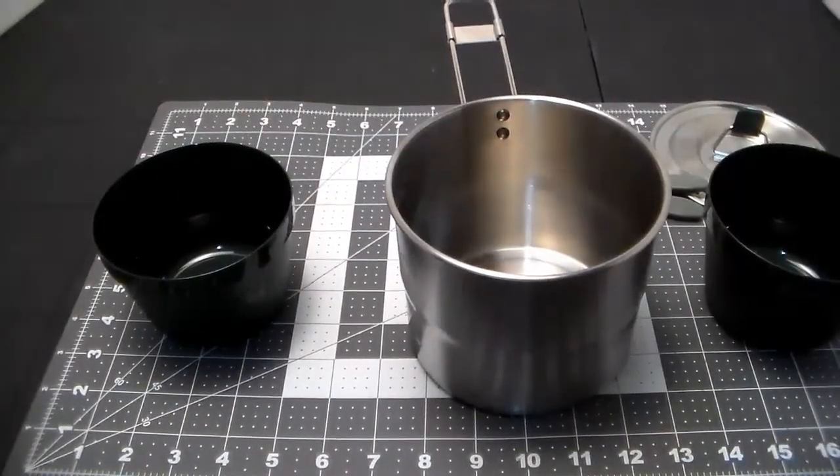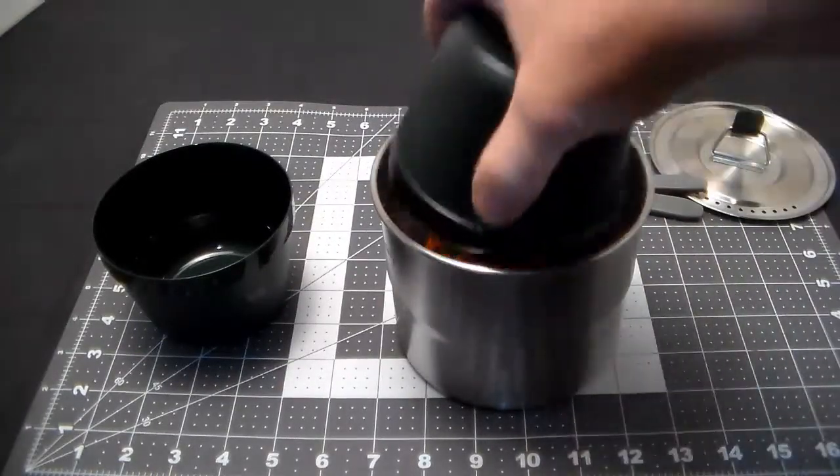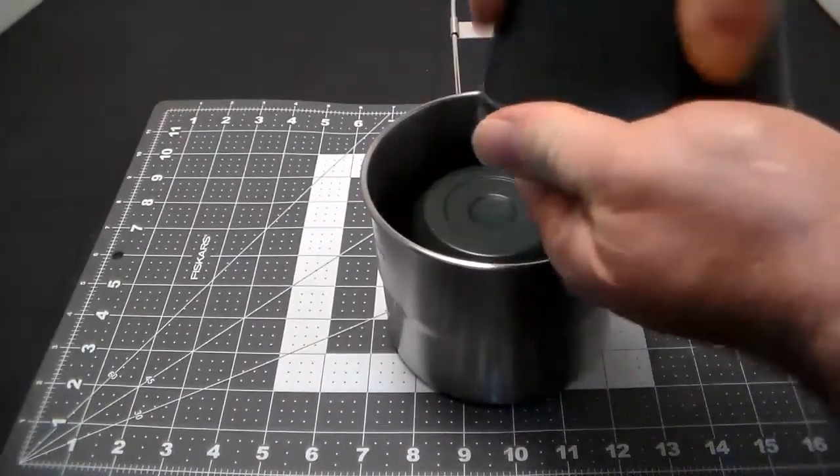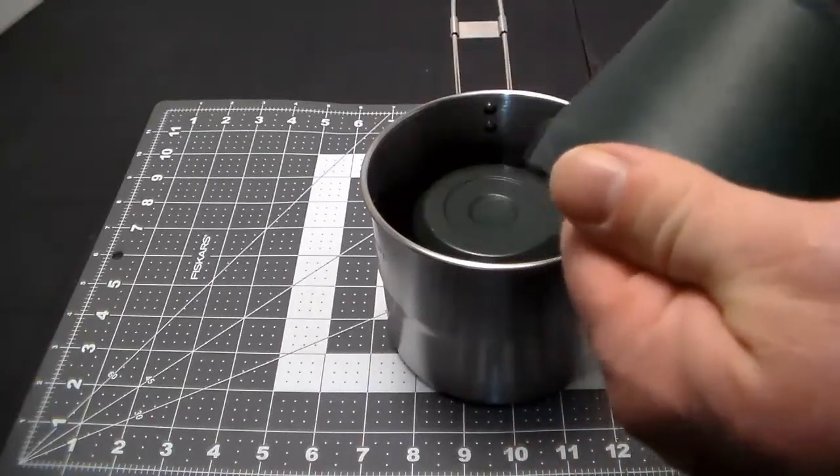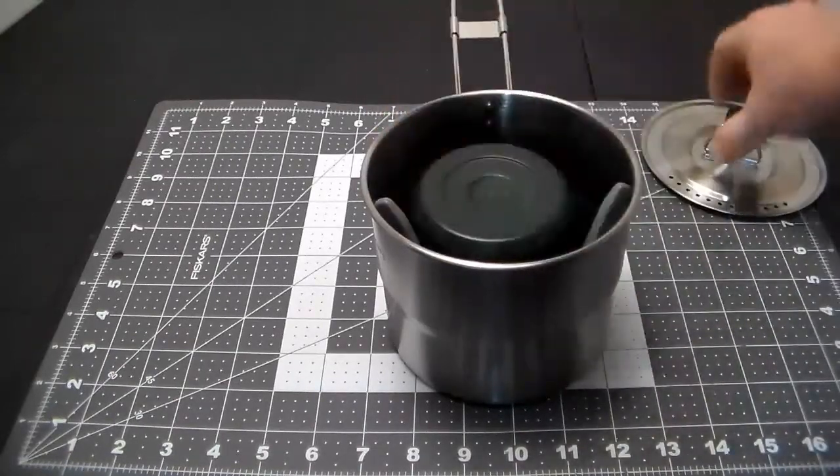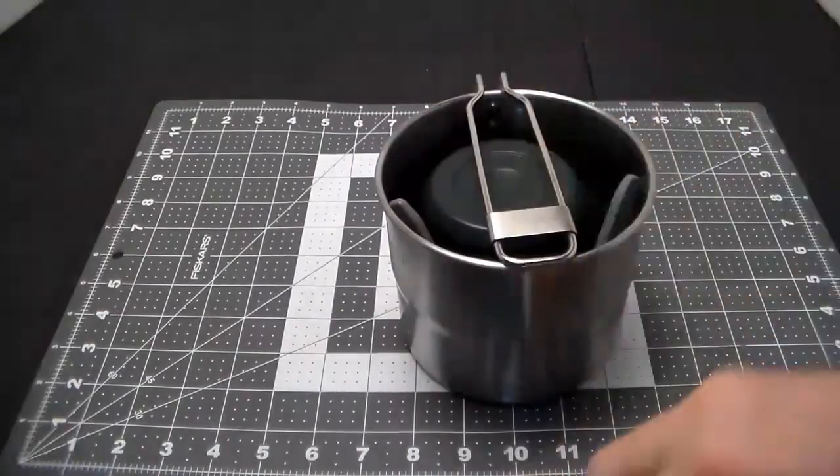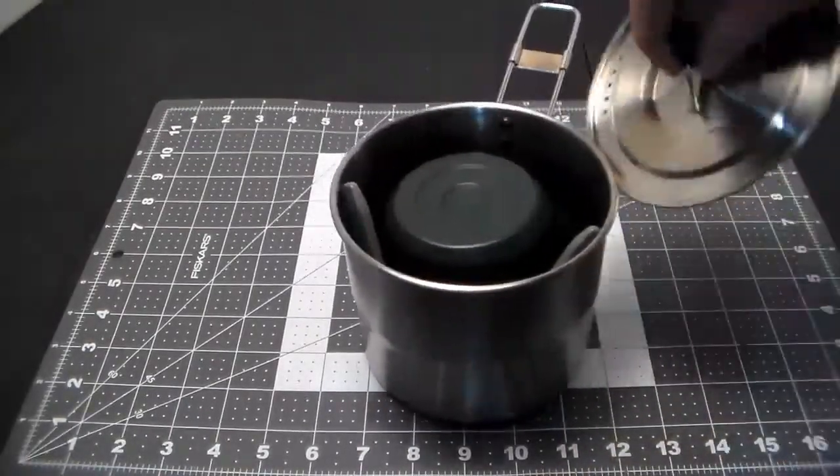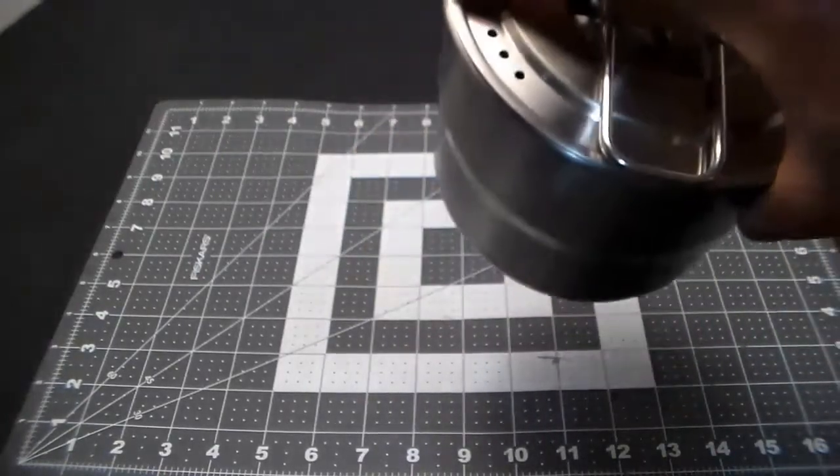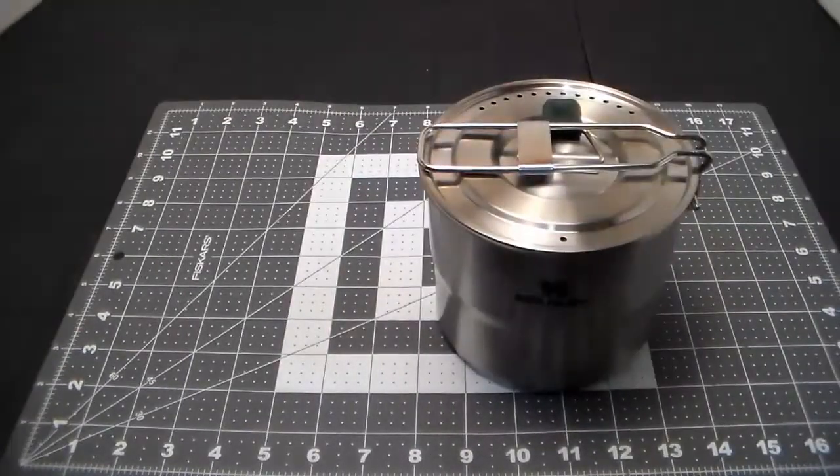So I do have a small isobutane canister, an MSR one, and I guess that would go down in the bottom like that. Cup. These cups are a little slippery. It'd be better if there was some more texture on here, they're pretty slick. So there it is with a small can of fuel in there. Let's do some weights, shall we.